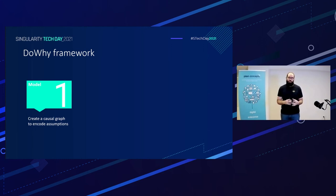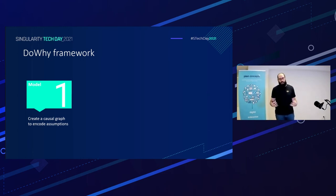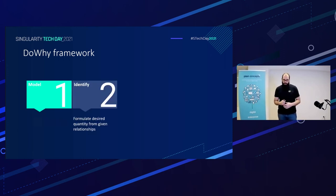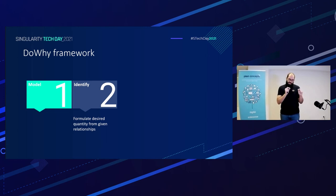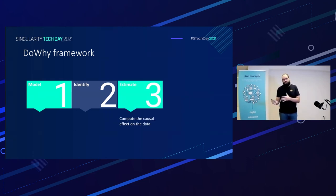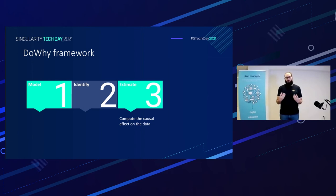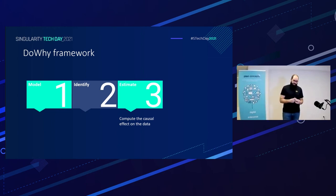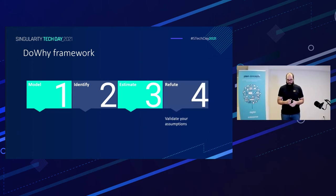In the first step — model — we create a causal graph from assumptions: location, price, and other features, showing implications of different inputs on the outcome, the treatment, and how they relate. In the second step — identify — we find which features in the graph create confounding. In the third step — estimate — we estimate both the real world and the counterfactual world to have the full chain of values, seeing how these identified variables influence the outcome and treatment. Finally, we evaluate and refute whether our assumptions were correct.